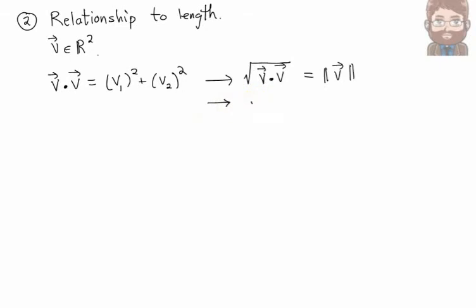Or, you'll often see this written as, if you take a vector dot itself, V dot V, that gives you the square of the length.